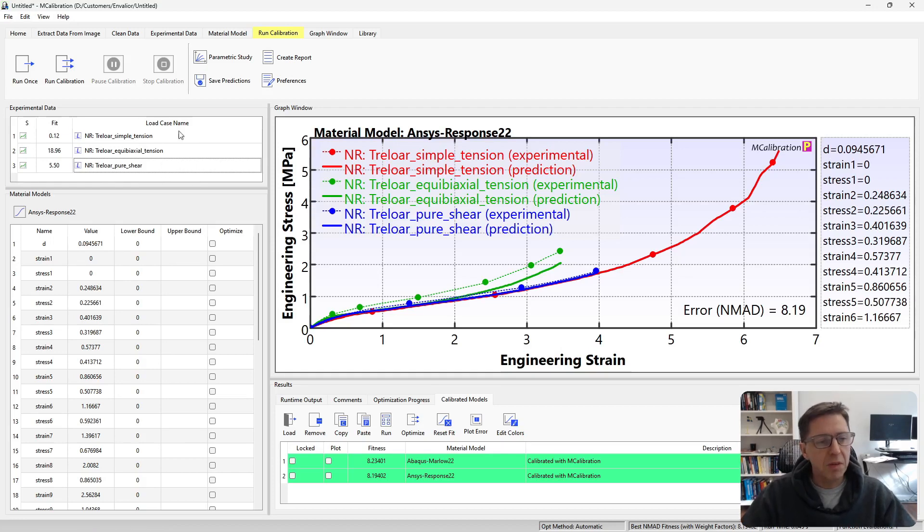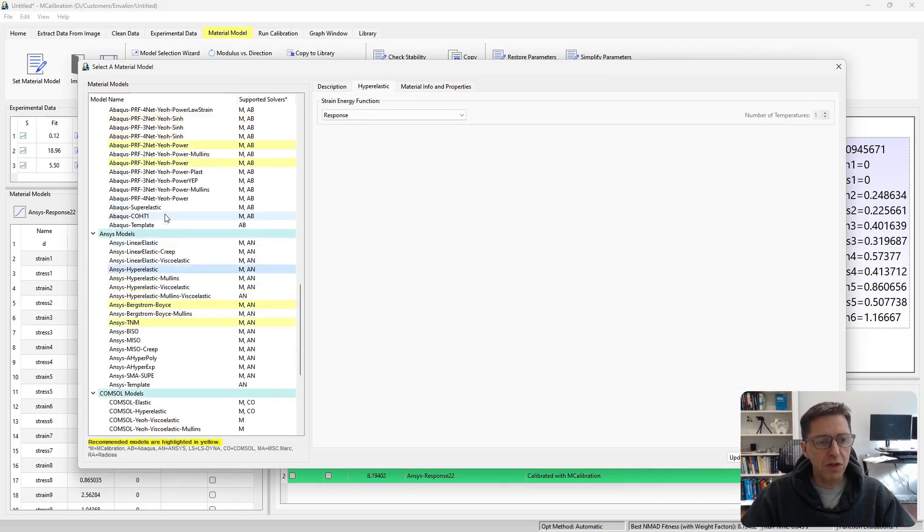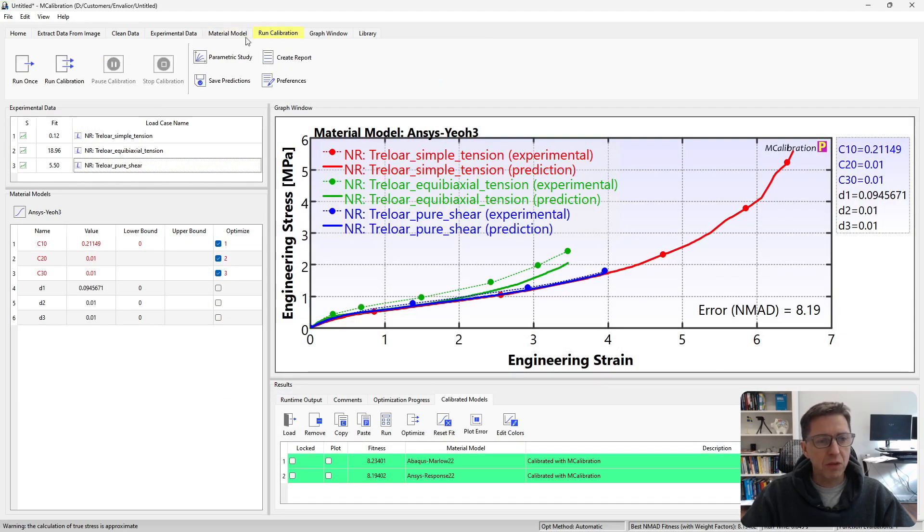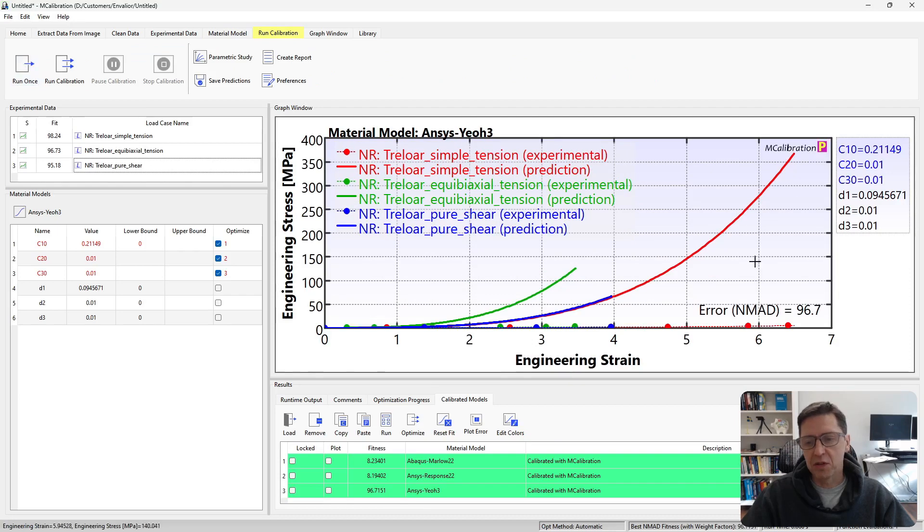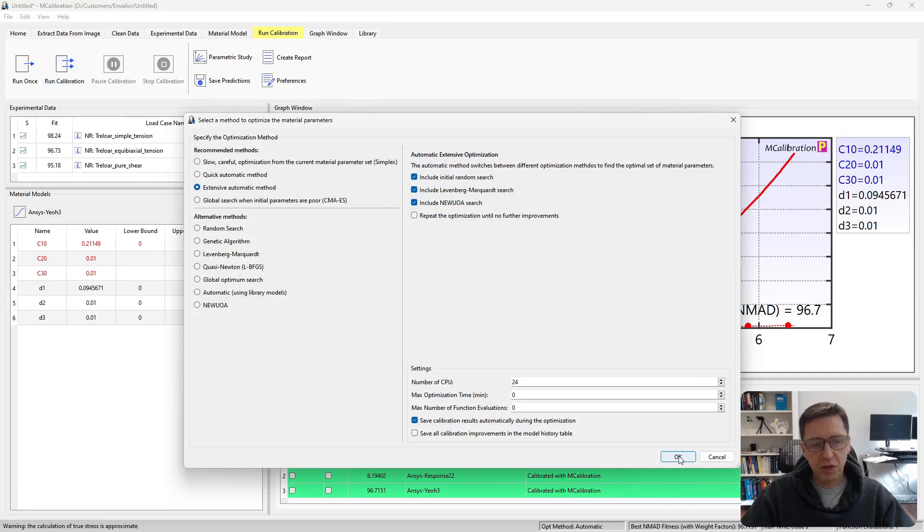We can try something else. Let's try a Yeoh hyperelastic model. I often use the Yeoh hyperelastic model. So we can use, in this case, the ANSYS version of the Yeoh hyperelastic model. We use three terms for Yeoh here. And we say OK. And if we run this once, we'll see the prediction is very, very stiff here compared to experimental data. But we can calibrate from this position, let the software do its job.